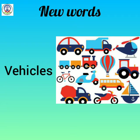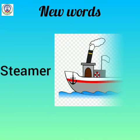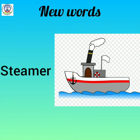Next: vehicles — v-e-h-i-c-l-e-s. Vehicles means something which transports people or things from one place to place. Vehicles ka matlab hota hai wahan, jaise ki car, cycle, bus. Next: steamer — s-t-e-a-m-e-r. Steamer means a ship that is driven by steam. Steamer ka matlab hota hai bhaap se chalne wala jahaz.